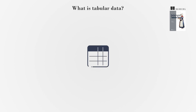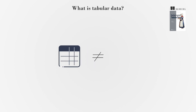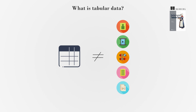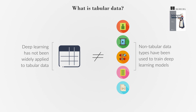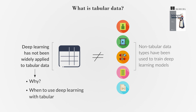Tabular data, organized in rows and columns, differs from other data types like images, videos, audio, text, and JSON data. While these non-tabular data types have been used to train deep learning models, deep learning has not been widely applied to tabular data. We will explore the reasons behind this and when it is appropriate to use deep learning with tabular data.